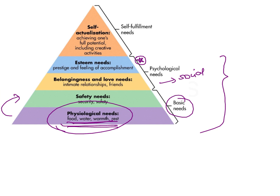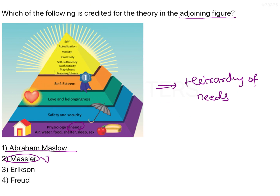In some textbooks it is written as 'Maslow,' which is not correct — it was given by Abraham Maslow. These theories of child psychology and social learning are very important from an exam point of view. They could ask you about a particular theory, who gave it, in which year, the clinical or dental applications, or the stages of a theory — for example, Piaget's stages of cognitive development and the age range of a particular stage.